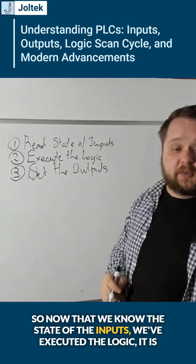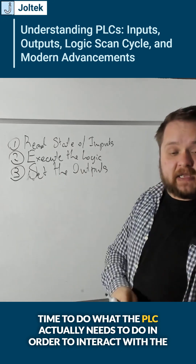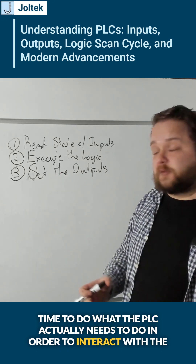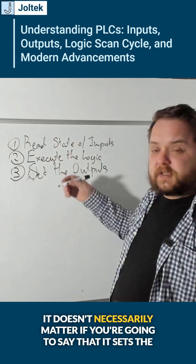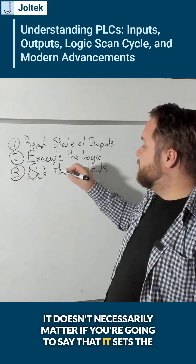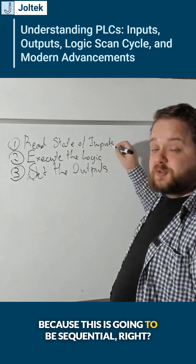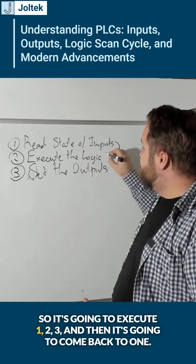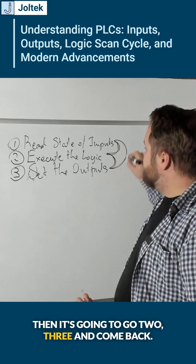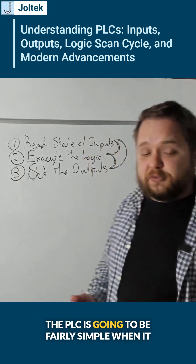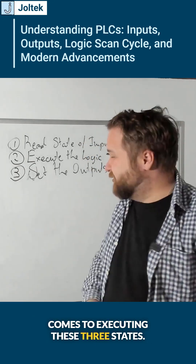Now that we know the state of the inputs and have executed the logic, it is time for the PLC to interact with the physical world — and thus it's going to set the outputs. It doesn't matter whether you say it sets the outputs before it reads the state of inputs, because this is sequential. It's going to execute one, two, three, and then come back to one, then two, three, and come back. The PLC is fairly simple when it comes to executing these three states.